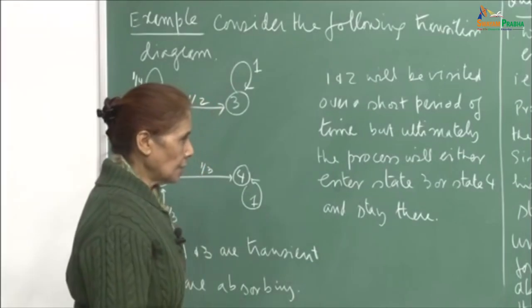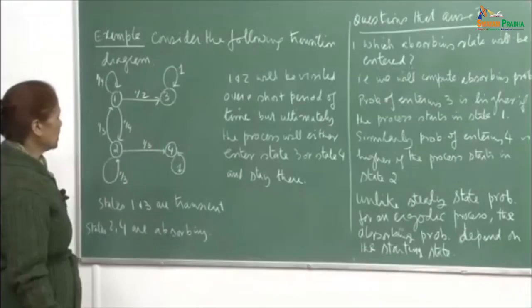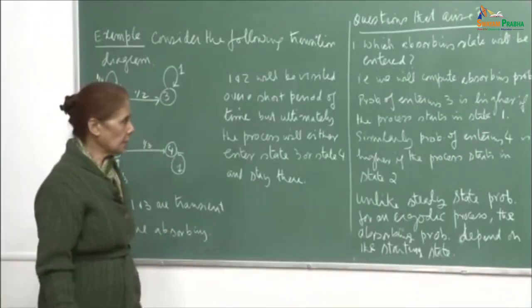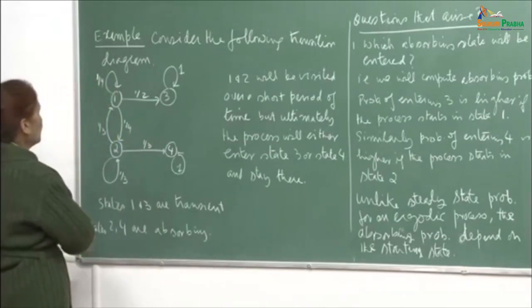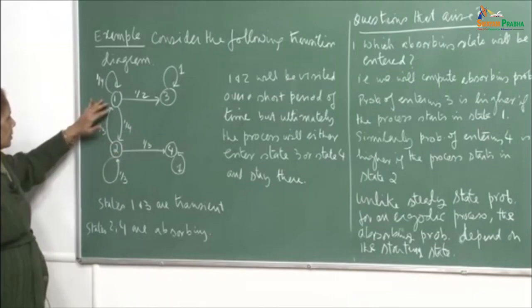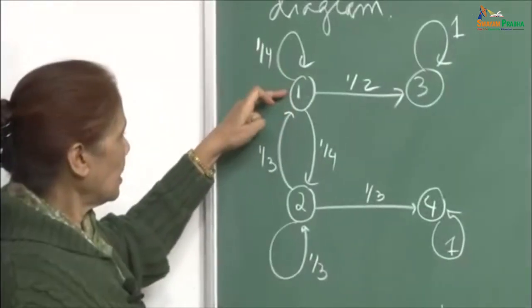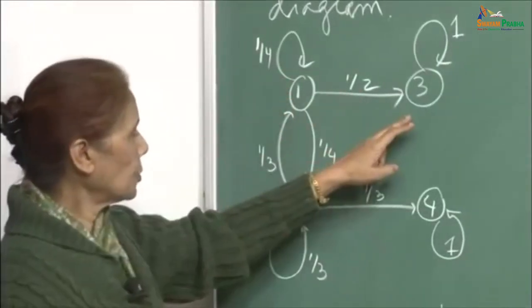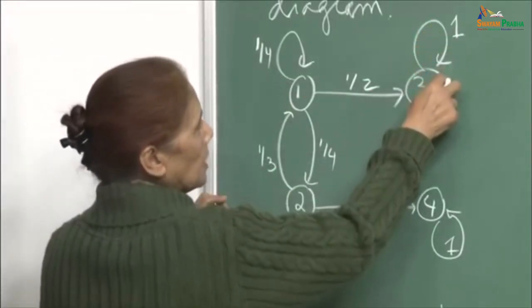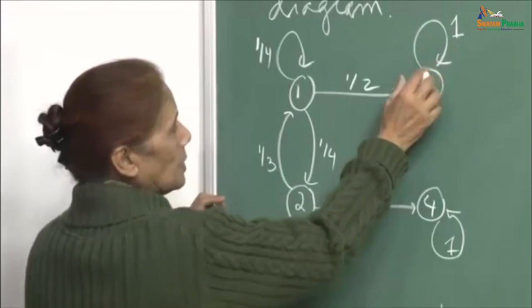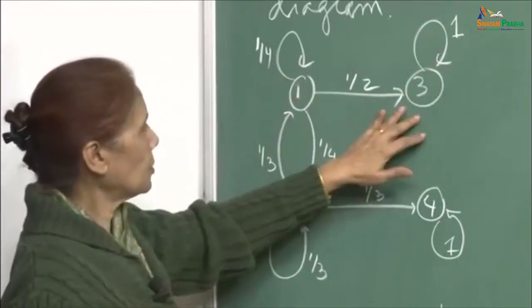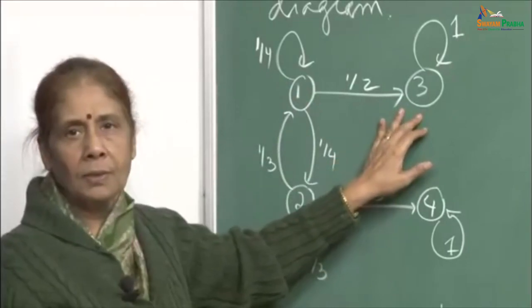I will continue the discussion with transient and absorbing probabilities, that is reducible Markov chains. Look at this transition diagram. There are four states, and you see that from state 1, you can either come back to 1 or go to 3. Once you reach 3, the probability of returning to itself is 1, so this is a certain event. Once the process from 1 goes to 3, the process will stop there.